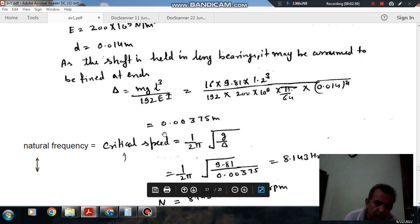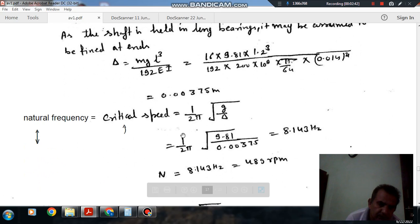Now delta is 0.00375 meter. Putting the value of delta in the formula, we can find out the critical speed in hertz. That is 8.143 hertz.